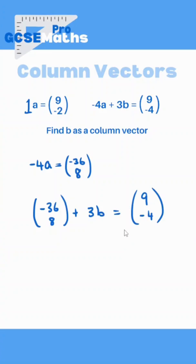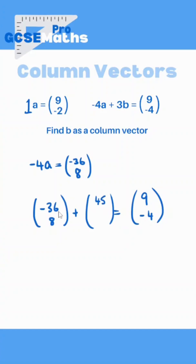Do you see how we almost have an equation here? The top numbers and bottom numbers are separate, but we've effectively got two equations. So how do I go from -36 and add something to get 9? Well I'd have to add 45 to get from -36 to positive 9. The same thing here — how do I go from 8 and add something to get -4? Well it would have to be negative, specifically -12.